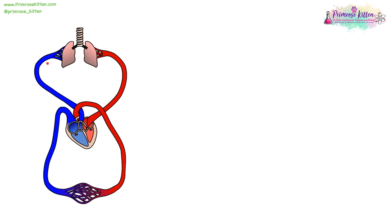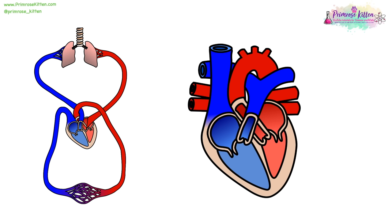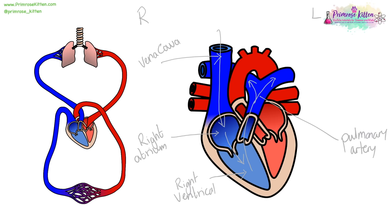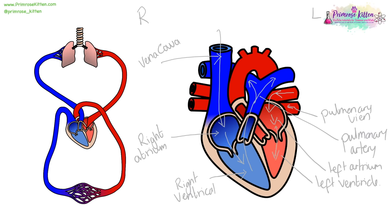Here we have the cardiovascular system, and it is a double system. The blood gets pumped from the heart to the lungs, goes back to the heart, and then gets pumped around the rest of the body. Blood enters via the vena cava into the right atrium, down through a valve into the right ventricle. From the right ventricle it goes up to the lungs via the pulmonary artery. It comes back into the heart via the pulmonary vein, into the left atrium, into the left ventricle, and then is pumped to the rest of the body via the aorta.